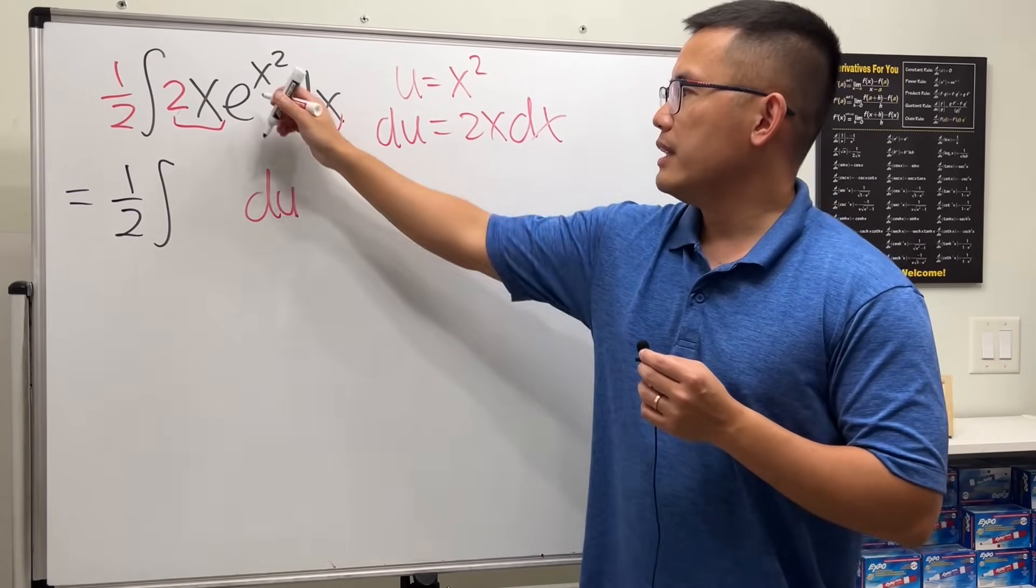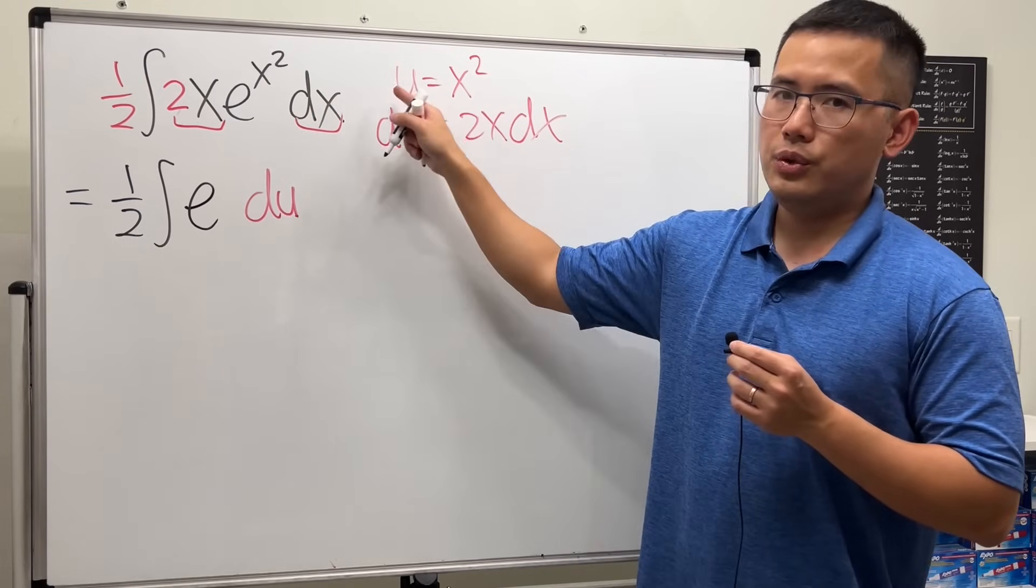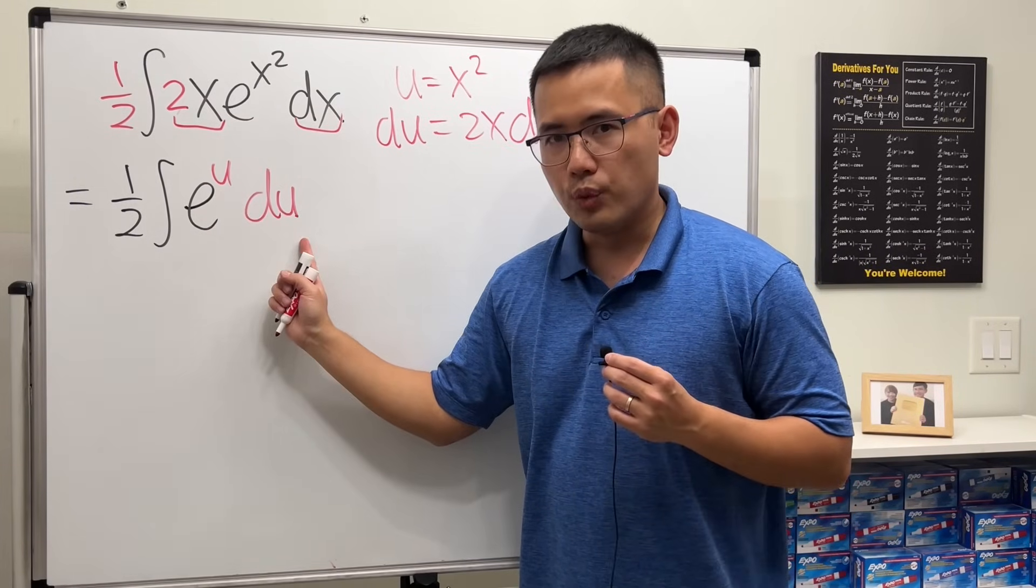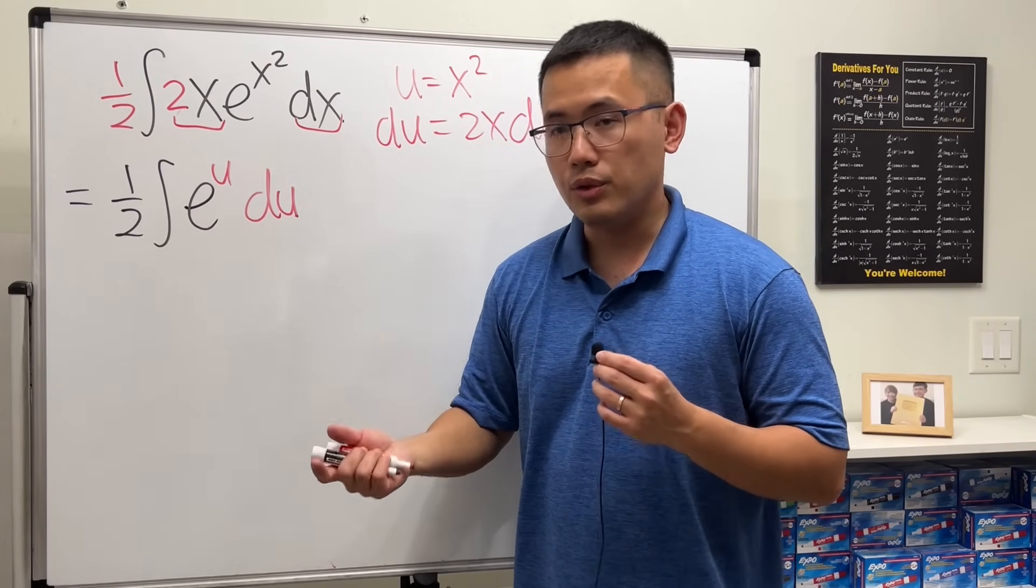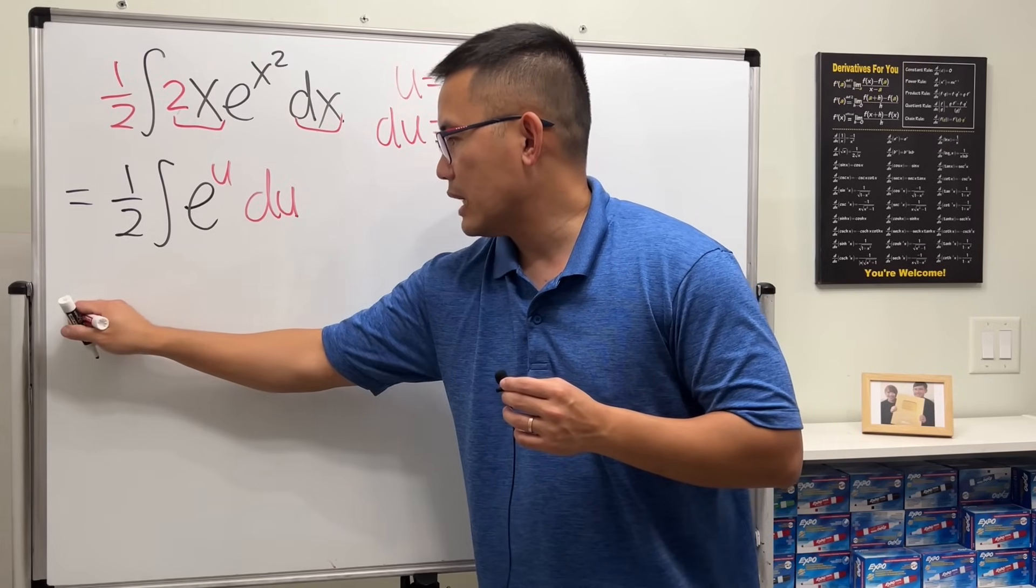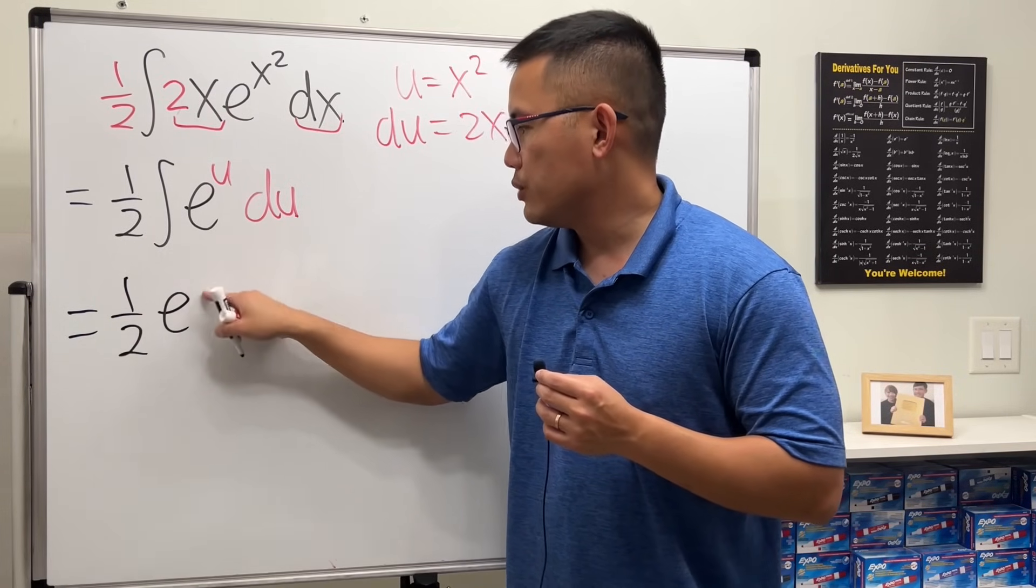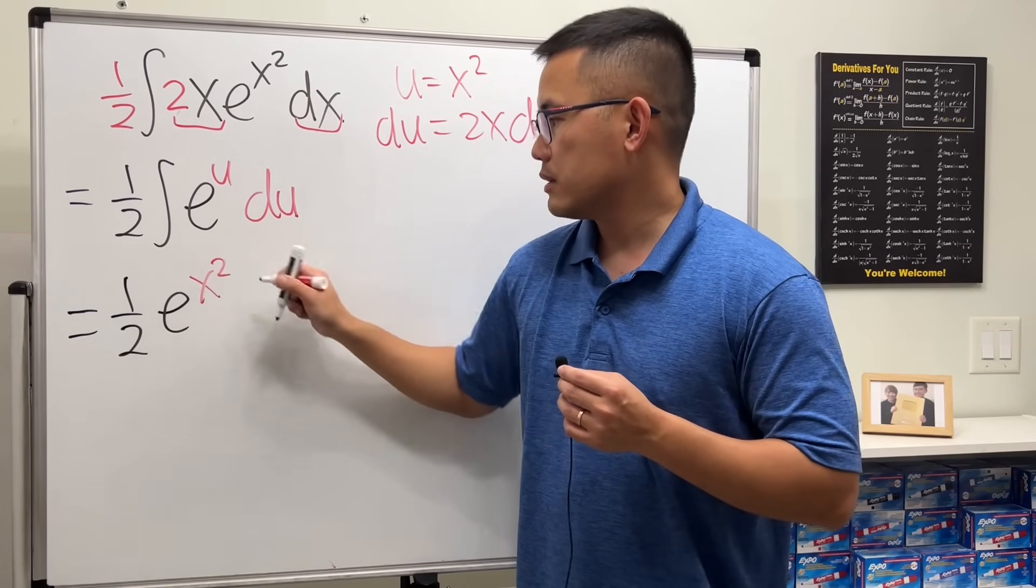We can put that right here, and then we have e, and the x squared is the u. So we're just integrating e to the u in the u world, and the answer for that is just e to the u. And then of course we still have that one half right here, and then e to the u—u is x squared—done. After we put down the plus C, that's it.